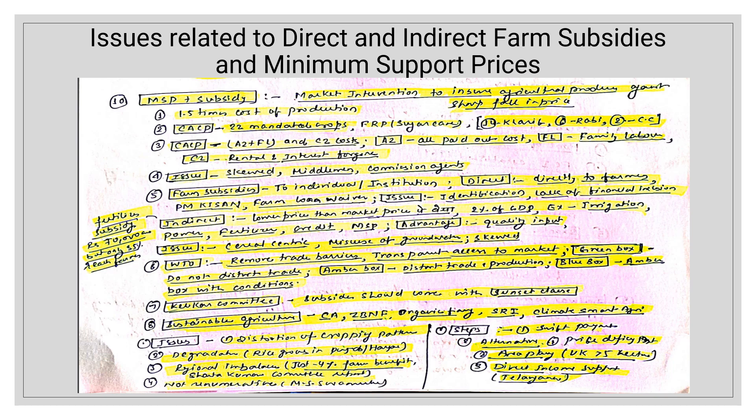WTO removes trade barriers and ensures transparent access to markets. Subsidies are categorized into three boxes: Green Box — subsidies are allowed as they do not distort trade; Amber Box — distorts trade and production; Blue Box — Amber Box with certain conditions. India is allowed Green Box subsidies. Then the Kelkar Committee report recommended that subsidies should come with a sunset clause — that is, they should be for a fixed term and not perpetual.